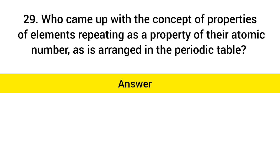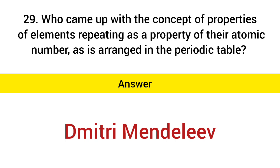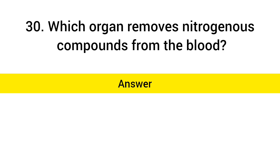Who came up with the concept of properties of elements repeating as a property of their atomic number as arranged in the periodic table? Answer: Dmitri Mendeleev. Which organ removes nitrogenous compounds from the blood? Answer: Kidney.